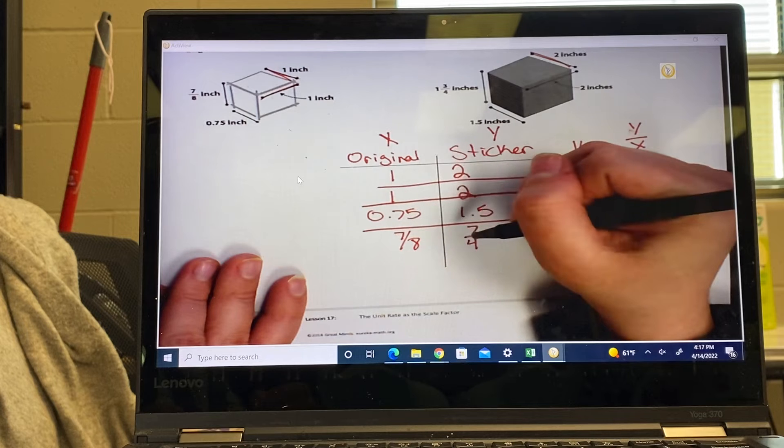Hold on, that should line up right. Seven-eighths, okay, two, one, three-fourths. Oh, we flipped it around, that's why. Trying to figure out what I did. Seven-fourths times eight over seven which becomes 56 over 28 which equals two.